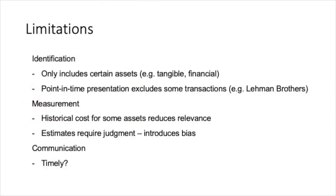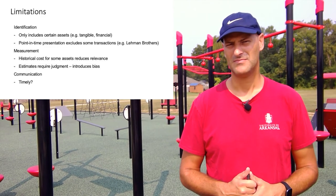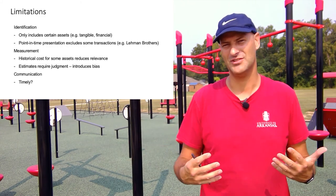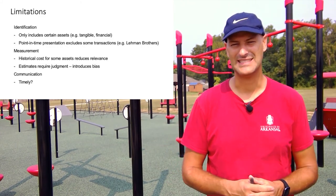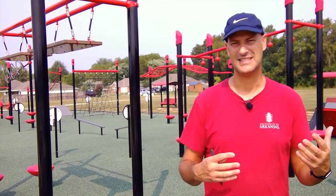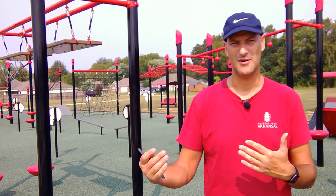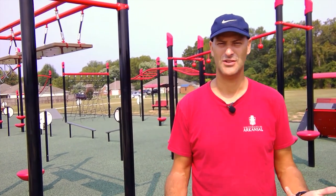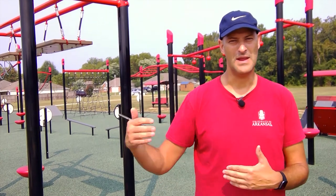Moving on to limitations. We break this down into accounting weaknesses in terms of identification, measurement, and communication. Starting with identification: the balance sheet only captures identifiable, generally tangible, and financial assets. It excludes a lot of intangible assets unless they're purchased by the company. Things like internally developed trademarks, patent costs, and brand value aren't captured on the balance sheet, even though those are assets the company can use to make future returns.